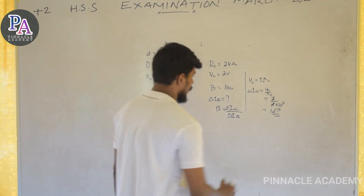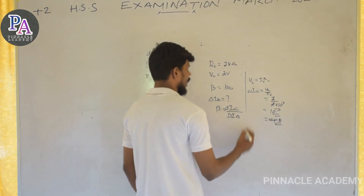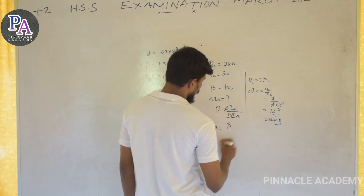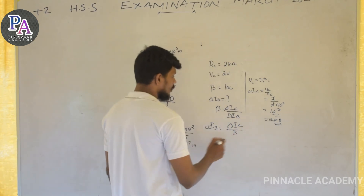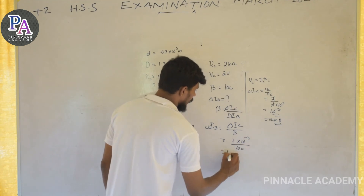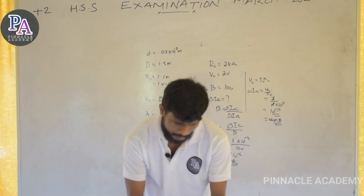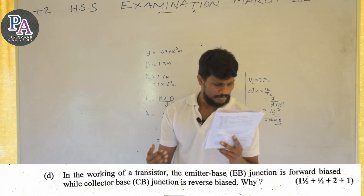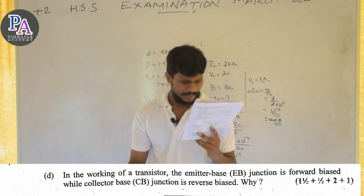Ic equals 1 milliampere. Delta Ic is equal to 1 milliampere. If we want delta Ib, it equals delta Ic divided by beta. Since delta Ic is 1 milliampere, delta Ib is calculated accordingly. This is 1 milliampere.